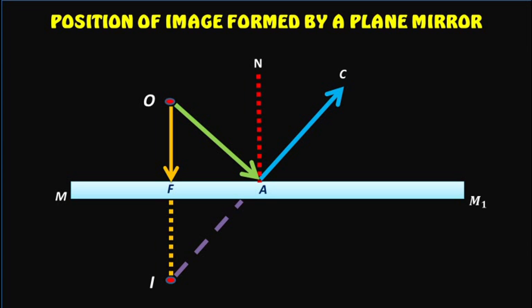We are to prove that IF is equal to OF. For the incident ray OA reflected as AC, angle OAN is equal to angle of incidence I and angle CAN is equal to angle of reflection R.